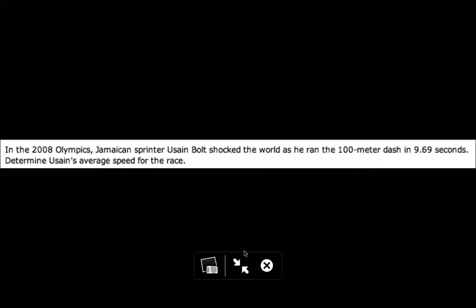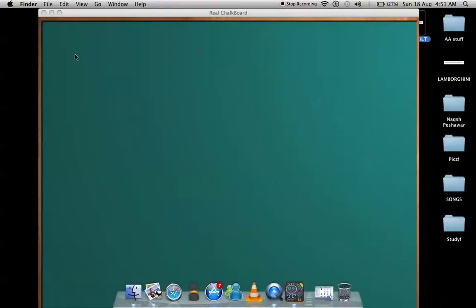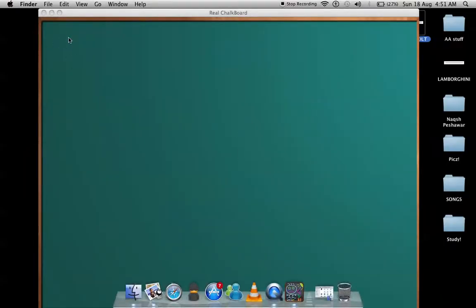Determine Usain's average speed for the race. So Usain shocked the world by covering a distance or displacement of 100 meters in a time of 9.69 seconds.